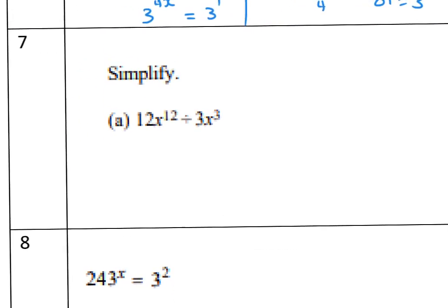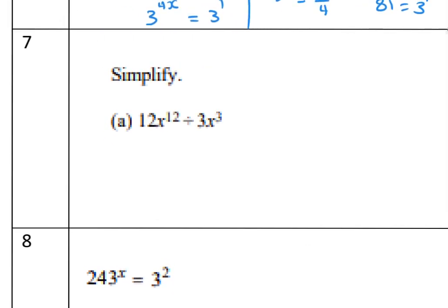Problem 7: simplify 12x^12 divided by 3x^3. Divide the coefficients: 12 ÷ 3 = 4. Then divide x^12 by x^3 — subtract the powers: 12 minus 3 equals 9. So the answer is 4x^9.